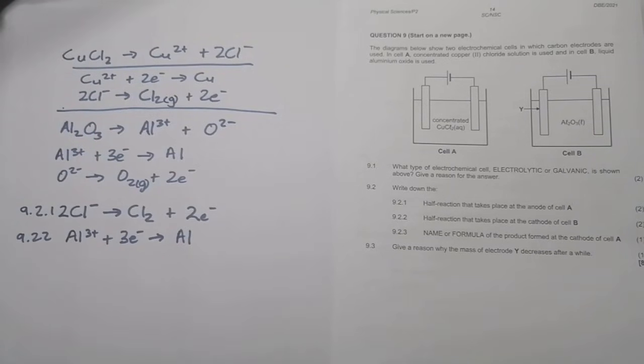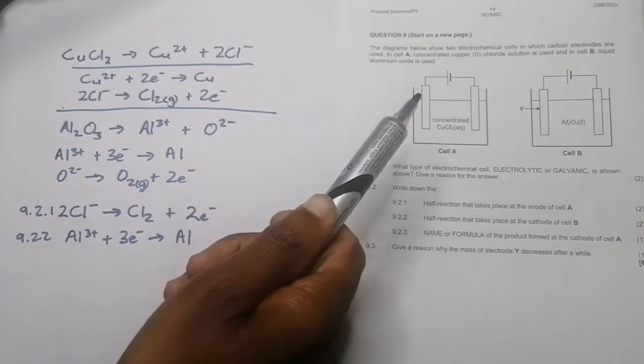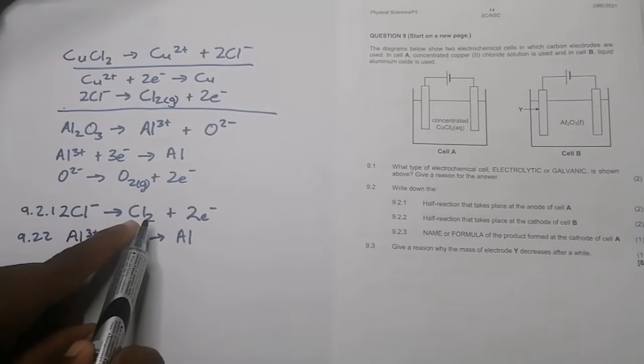And then they say name or formula, rather name of formula of the product that formed at the cathode of cell A. So on cell A, remember we said on the anode we were forming chlorine.